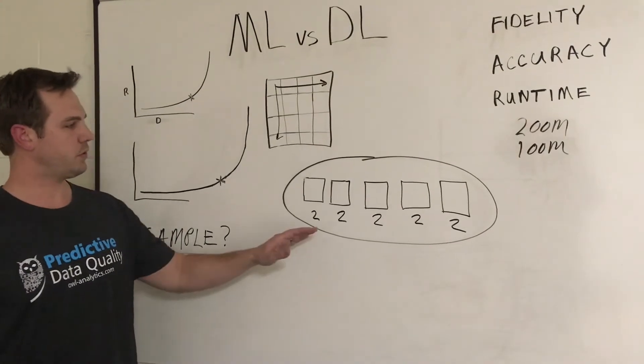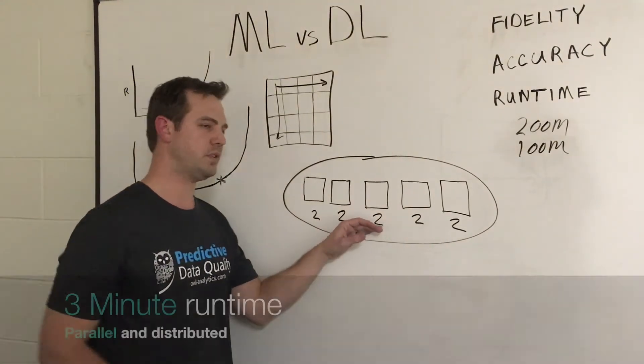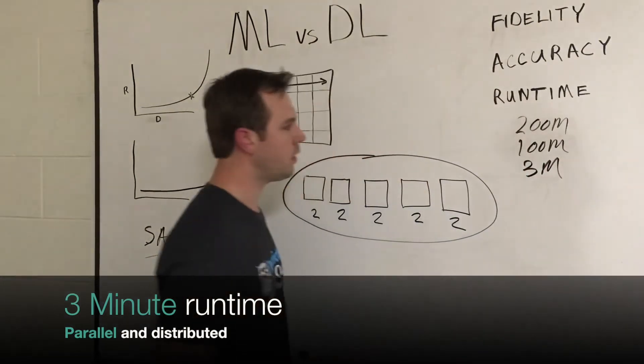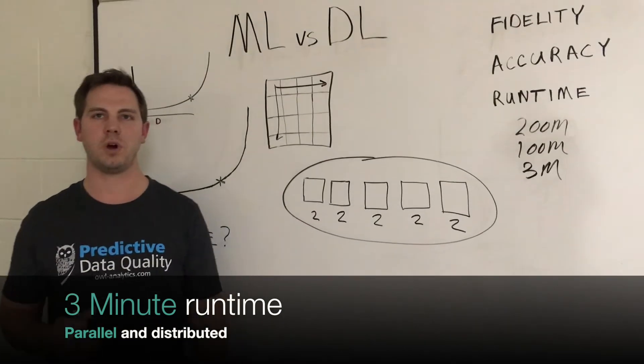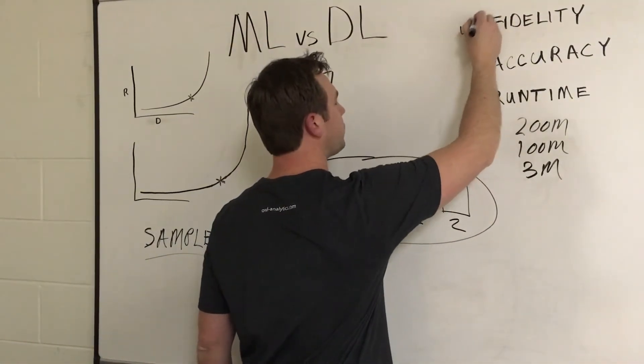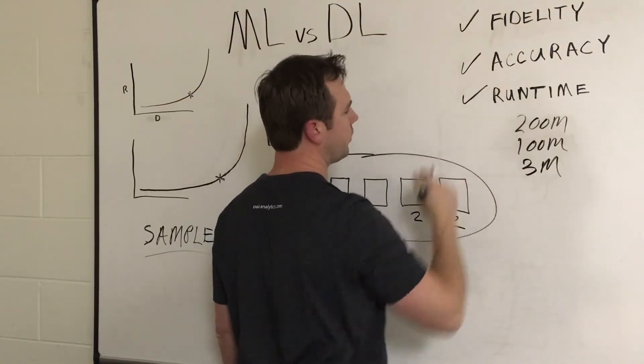That was able to net us an almost near-perfect two-minute runtime, but with some diminishing returns in context switching we netted a three-minute total runtime. So in about the time it took to watch this video, we were able to achieve a hundred percent fidelity, near-perfect accuracy, and an interactive runtime.